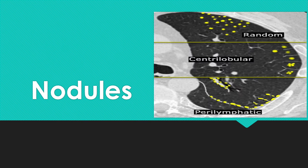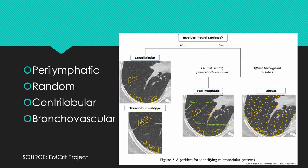The next pattern to discuss is nodules. Nodules can be seen in varying forms and can occur in various distributions. We'll divide nodules on the basis of their distribution.